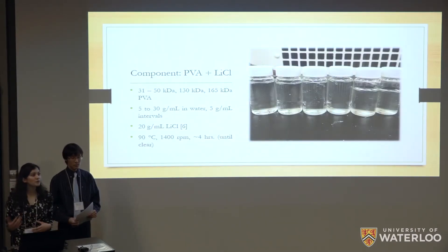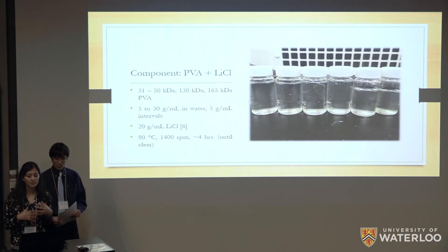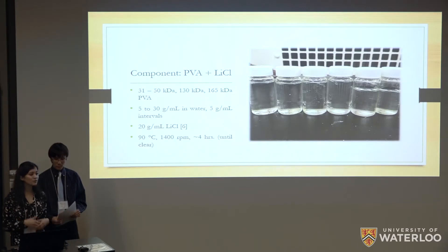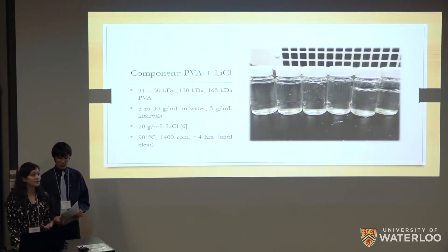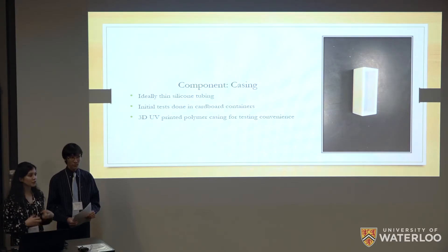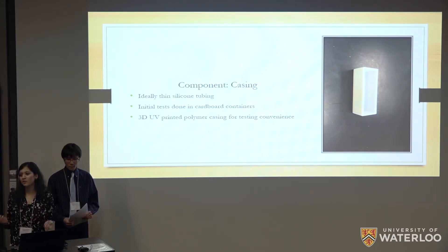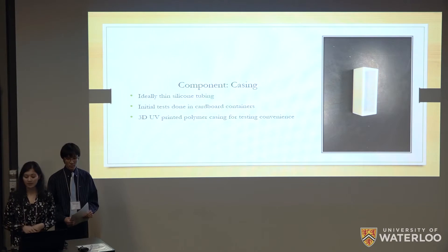While working on our electrode, we also worked on our electrolyte side by side. For our electrolyte, we used polyvinyl alcohol and lithium chloride solution. To come up with our recipe, we did optimization studies using three different molecular weights of polyvinyl alcohol and different concentrations. For lithium chloride, we used a 20 gram per millilitre solution based on our reference paper, and for the mixture we heated it at 90 degrees for four hours while constantly stirring until a clear solution was obtained. For our casing, we proposed initially to use silicon tubing, but for ease and convenience of testing, we used initially a cardboard container and then a 3D plastic container to test our device.